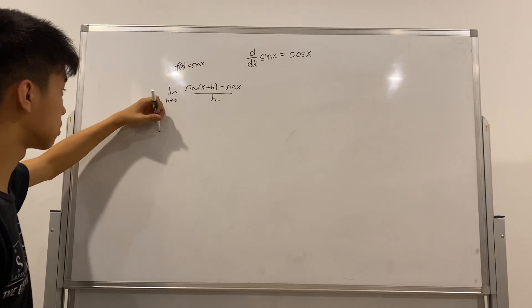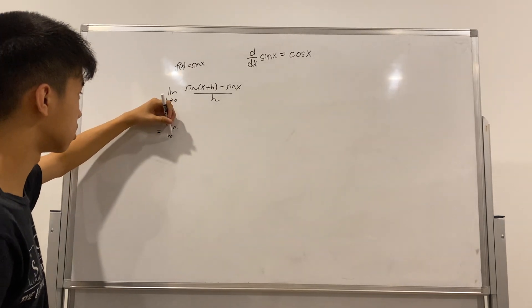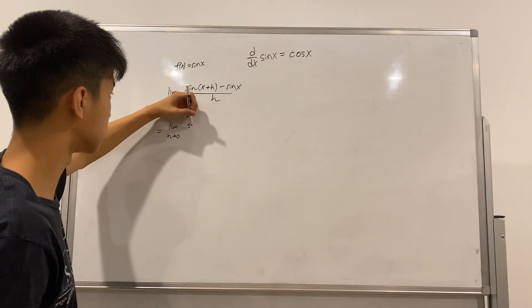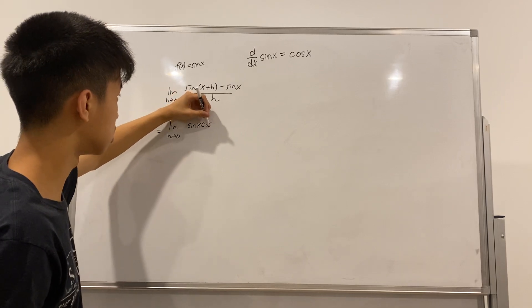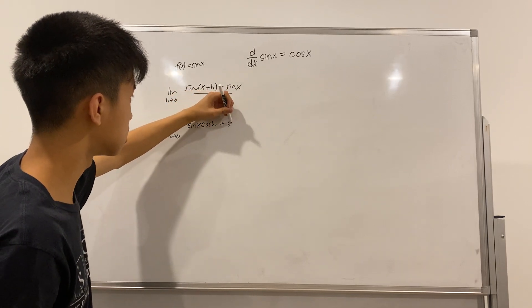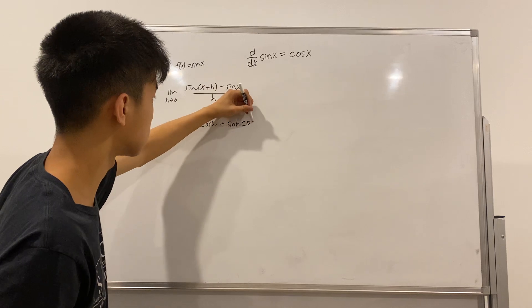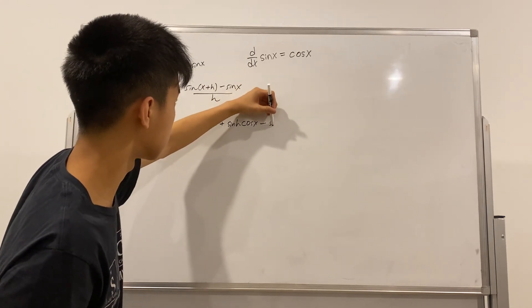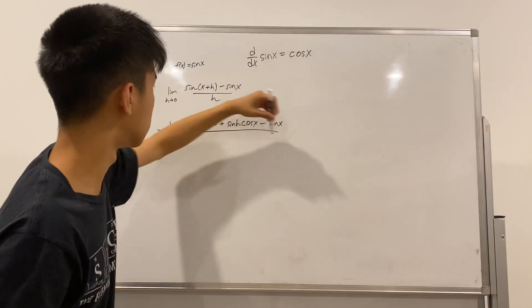Then we're going to be using an important trig identity to help us out here. That's equal to sine x cosine h plus sine h cosine x minus sine x over h.